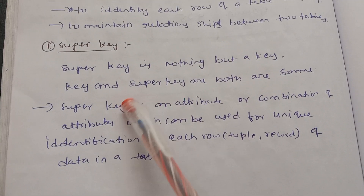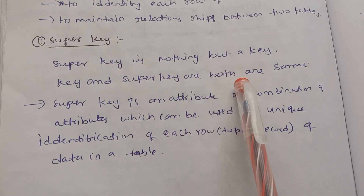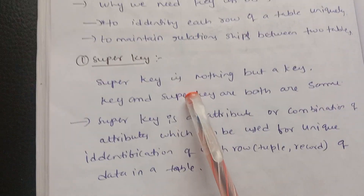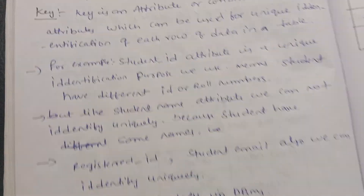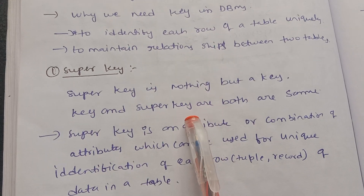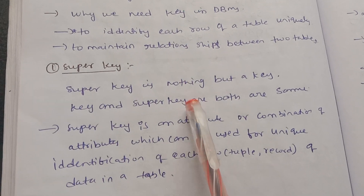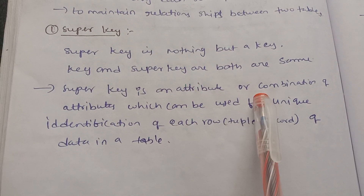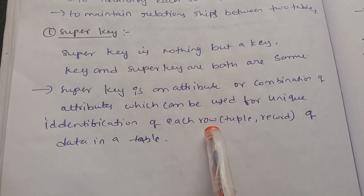Super key is nothing but a key. Key and super key are both the same. Super key is an attribute or a combination of attributes which can be used for uniquely identifying rows in a table.